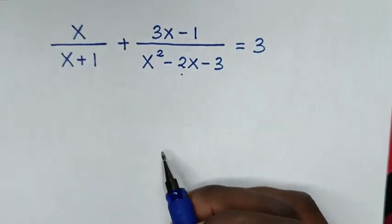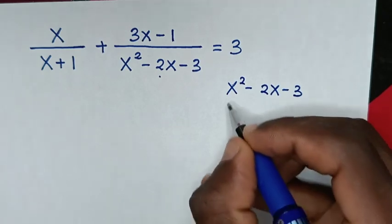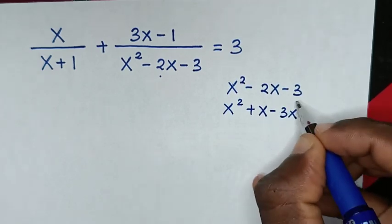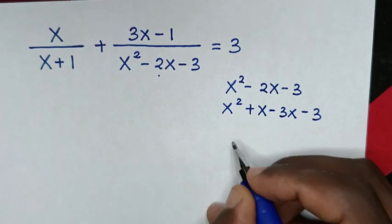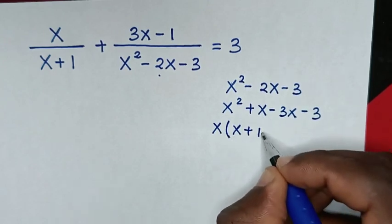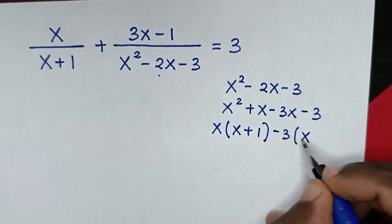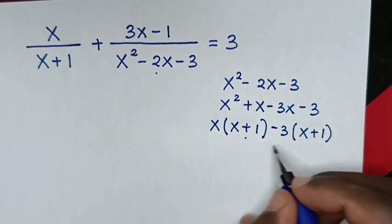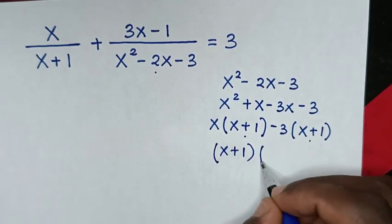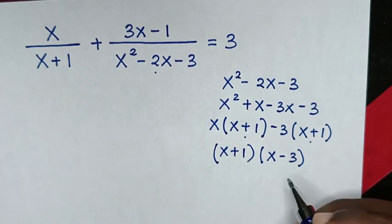From x squared minus 2x minus 3, when we factorize this it will be x squared plus x minus 3x minus 3. Then x is common, so we take x out of the bracket: x plus 1. Then negative 3 is common, giving negative 3 times (x plus 1). So x plus 1 is common, giving factors (x plus 1)(x minus 3).